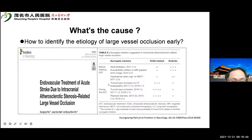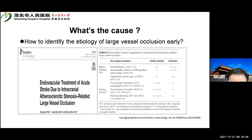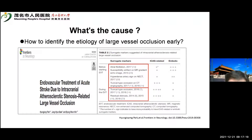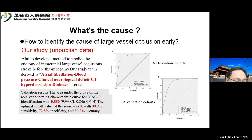How can we identify the etiology of a large vessel occlusion early? Studies show that some surrogate markers can suggest ICAS-related occlusions, such as atrial fibrillation on monitoring, MR gradient echo imaging, CT hyperdense artery sign, truncal occlusions, and residual stenosis on imaging.